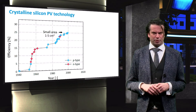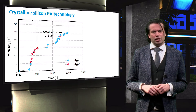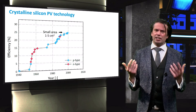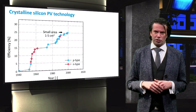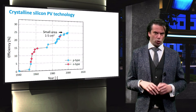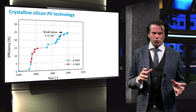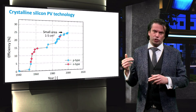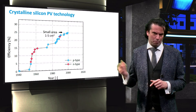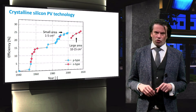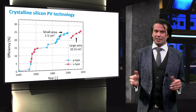The red data points represent crystalline silicon solar cells with an N-type absorber, while the blue data points are cells with a P-type absorber layer.